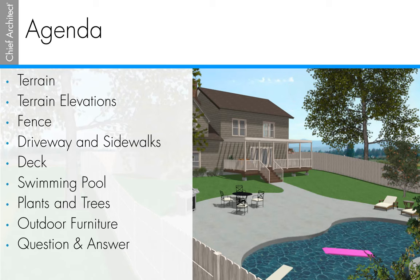In this demonstration we're going to be building a terrain, adding terrain elevations, building a fence, driveway, and sidewalk, creating a deck, making a swimming pool, adding plants and trees, and then finally placing outdoor furniture and accessories. Let's get started by opening up the Home Designer Professional software.